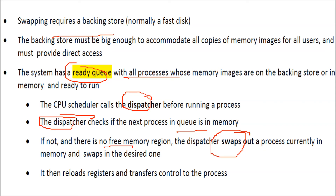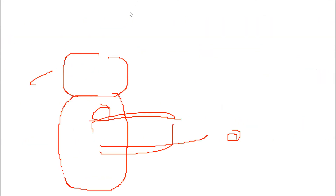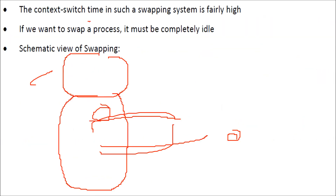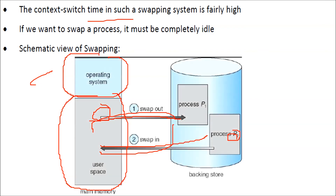If the process is not in memory and there is no free memory region, the dispatcher will swap out the current idle process and swap in the desired one. After that, it does housekeeping — reloading the registers and transferring control to the process. There is also context switch time involved because of swapping, so we swap out only those processes which are completely idle.